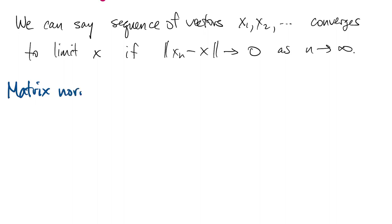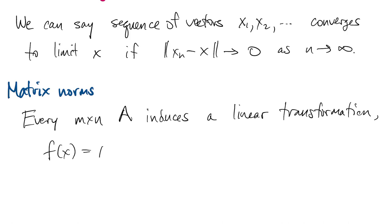Now we want to extend norms to matrices. This is more complicated, and it's a bit more subtle than you might be expecting. The key observation is that every matrix induces a linear transformation. This is a fact usually covered in your first linear algebra course. So we could define a function of x as A times x for all vectors x. That transformation has the properties of a linear transformation, and matrix norms are based on this interpretation of a matrix.